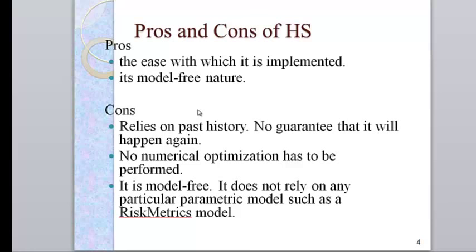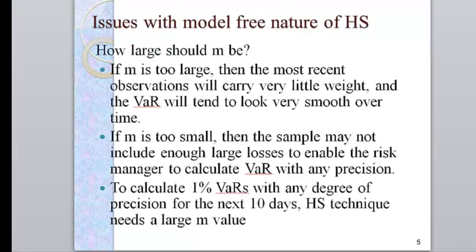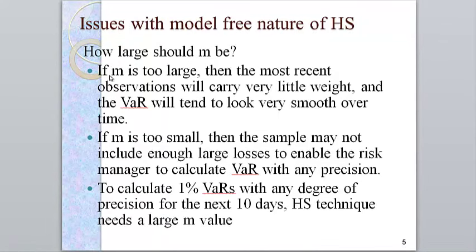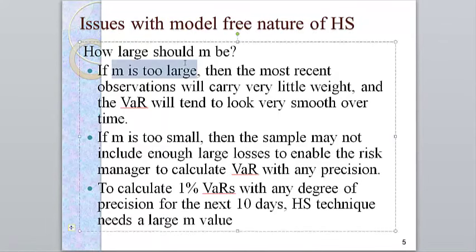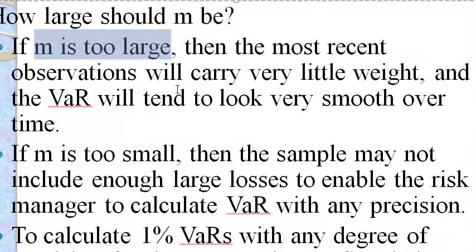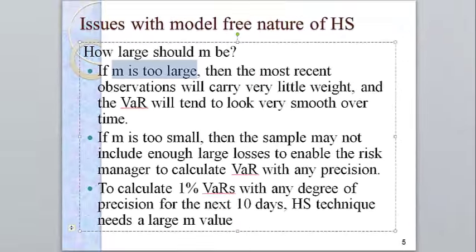The cons: it relies on past history and has no model, so some people don't like it. Another problem is we don't know how large M should be, whether one year, two years, or five years. JP Morgan uses one year of historical data, Royal Bank of Canada uses two years. There's no standard on how to choose it.